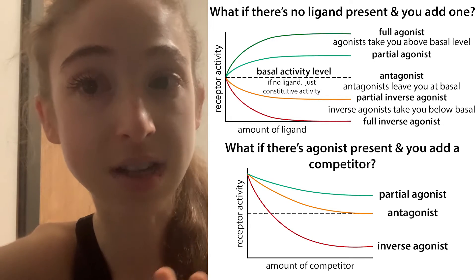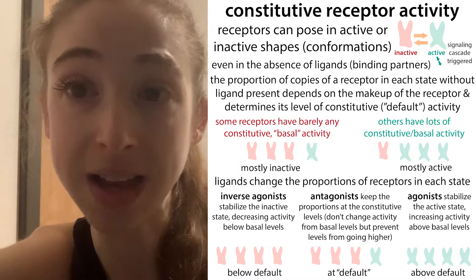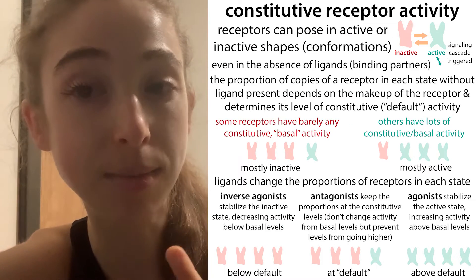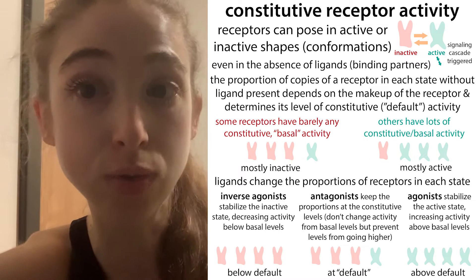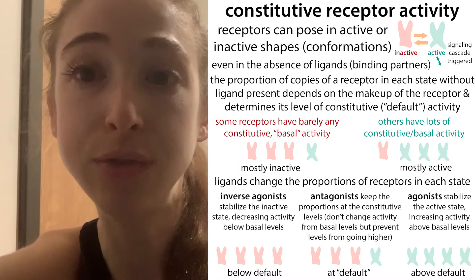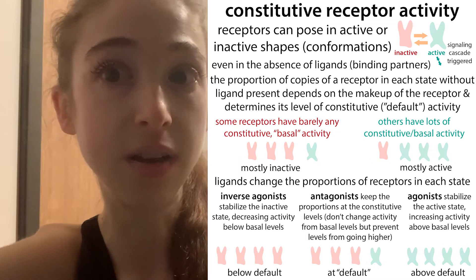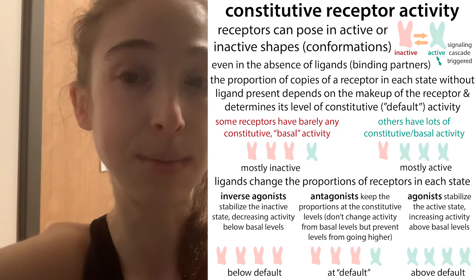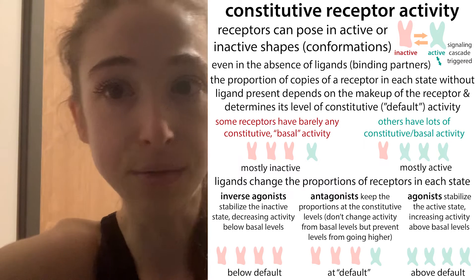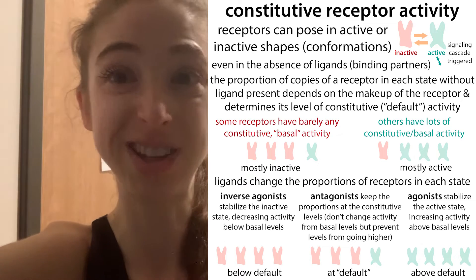So let's discuss what all these terms mean, as well as what's actually happening at the molecular level to explain this — how we can have proportions of receptors being in active versus inactive conformations, or shapes.